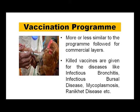The vaccination program addresses diseases that chickens are prone to, including bacterial, viral, protozoal, and parasitic diseases. Killed vaccines are given for infectious bronchitis (IB), infectious bursal disease (IBD), mycoplasmosis, and Ranikhet disease (Newcastle disease), which is a program similar to commercial layers but using killed vaccines.